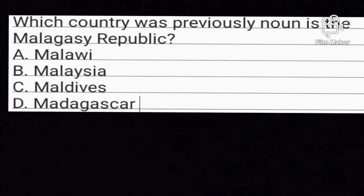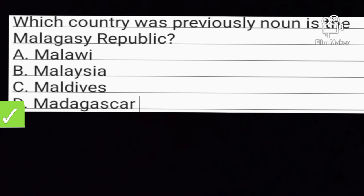Question number 6. Which country was previously known as the Malagasy Republic? Option A: Malawi. Option B: Malaysia. Option C: Maldives. Option D: Madagascar. Option D is the correct answer: Madagascar.